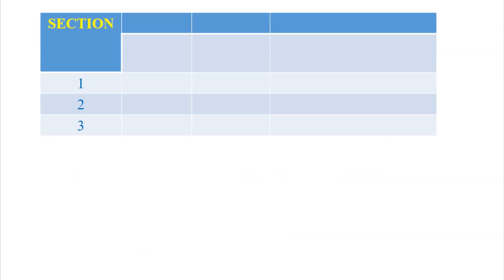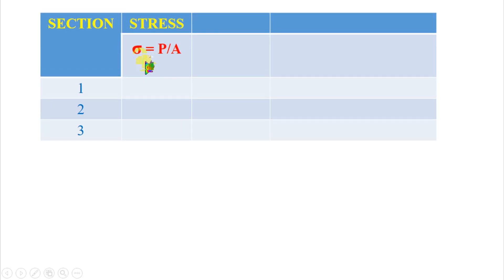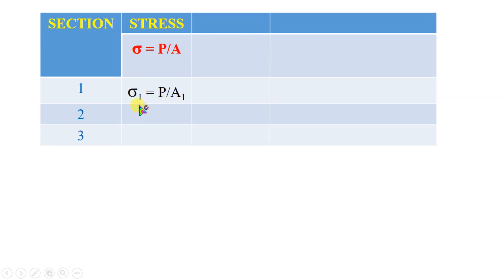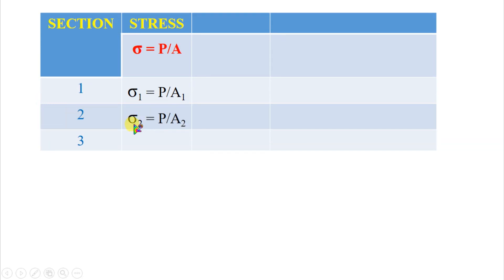In order to explain the stress, strain and change in length for bars with varying cross sections, I have prepared a tabular column. Sections 1, 2 and 3 are there. The stress formula is sigma = P/A. So sigma1 = P/A1, sigma2 = P/A2, and sigma3 = P/A3. Here P remains constant because there is only one load given in the bar.